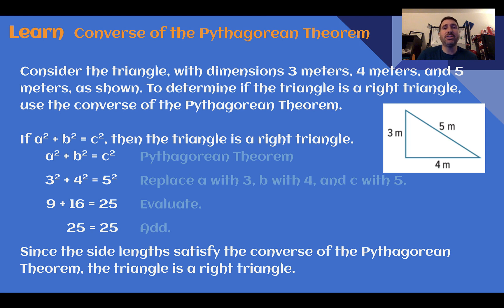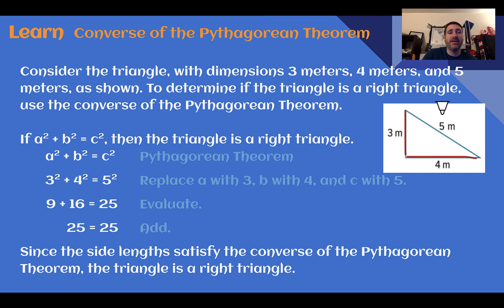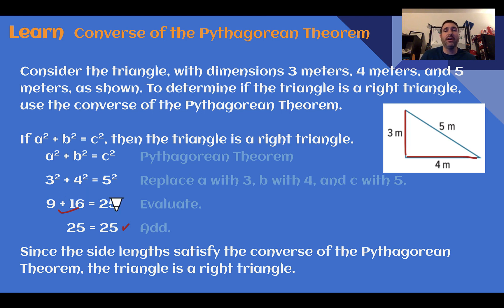Consider the triangle with dimensions 3 meters, 4 meters, and 5 meters, as shown in the picture. To determine if this triangle is a right triangle, we'll use the Converse of the Pythagorean Theorem to see if it's true. Does a squared plus b squared equal c squared? Plugging in 3 and 4 as our legs: is 3 squared plus 4 squared equal to 5 squared? 3 squared is 9, 4 squared is 16. Add them together, we get 25. Is 5 squared equal to 25? Yes. So since a squared plus b squared equals c squared, this is a right triangle.